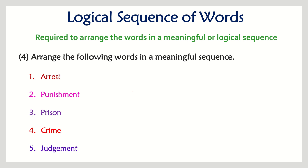Next question: arrange arrest, punishment, prison, crime, and judgment in a logical sequence. Obviously, first a crime happens — somebody commits a crime. Then the criminal is arrested, so arrest is second. Once arrested, the criminal goes for judgment, which is fifth. Once the judge issues a punishment, the criminal is sent to prison. That is the correct sequence.